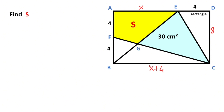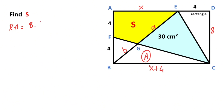Let's call this point a and here let's call b. If you focus on triangle BGC, I want to represent this triangle area with capital A. If we calculate the rectangle area: rectangle area equals eight times (x plus four), so eight x plus 32.